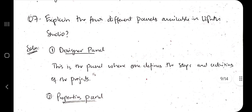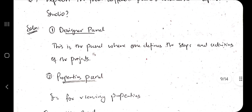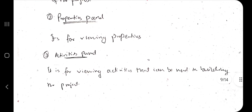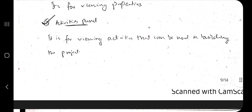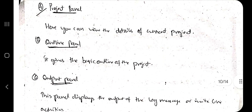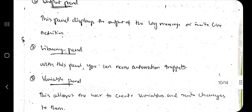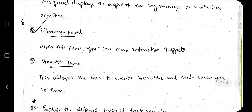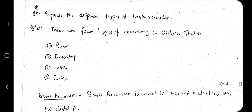The next question is: explain the four different panels available in UiPath. There are actually many panels but you can write any four. Designer panel: handles the designing. Properties panel: changes the properties. Activities panel: displays and manages activities. Project panel: handles the project. Outline panel: shows the outline. Output panel: shows the output. Library panel: shows the library. Variable panel: handles the variables. Remember as many as you can.